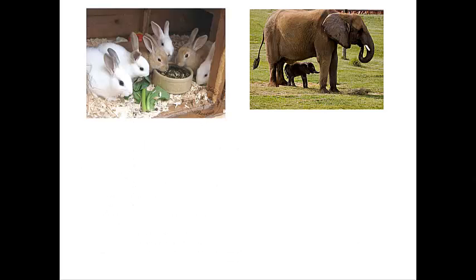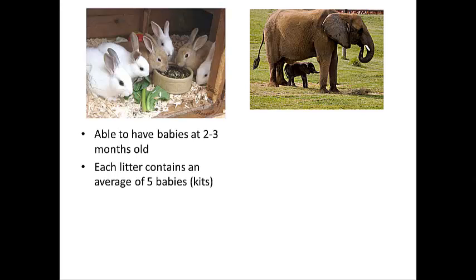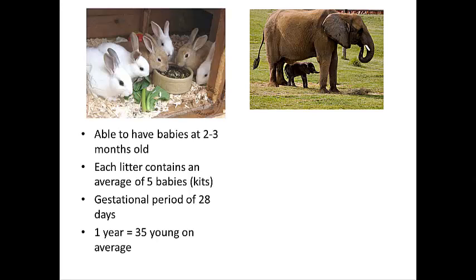Let's compare two species with very different reproductive potentials. First, the eastern cottontail: they can have babies when only two to three months old. Each litter contains one to twelve babies — called kits — with an average of about five. The gestational period is only 28 days, meaning a rabbit only has to wait 28 days before it can get pregnant again. So in one year, on average, one rabbit can have 35 young.